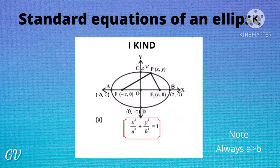The standard equation of an ellipse is x²/a² + y²/b² = 1. Here, a gives the x-intercept and b gives the y-intercept — the intercept on each axis gives that value. This is called the first kind of ellipse, where the foci lie on the x-axis. An important note: the value of a is always greater than b.